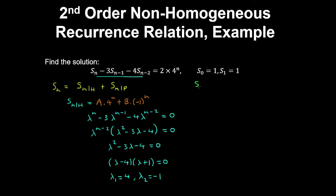To find a particular solution, we recognize that 4ⁿ is already in the homogeneous solution. So we assume a particular solution of the form c·n·4ⁿ, which is of a similar form to the forcing function g(n).